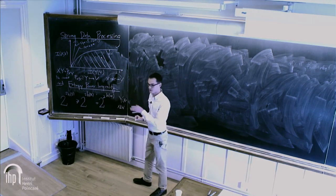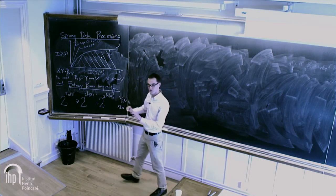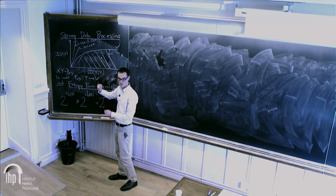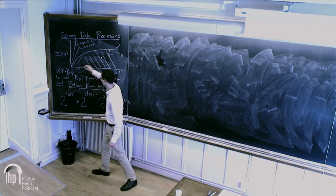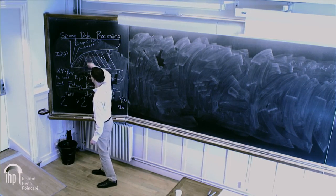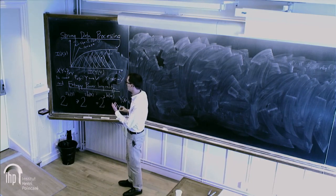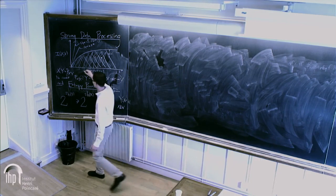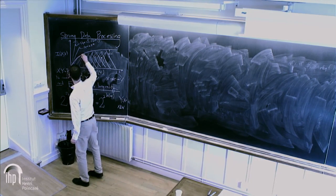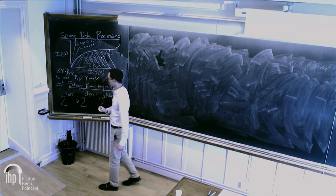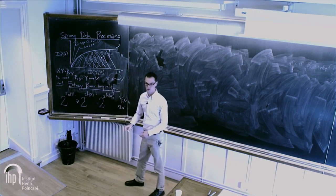The joint range of those points, over all channels, traces out some set. What's of interest is the upper boundary on this set — it's the ultimate or 'strong' data processing inequality.